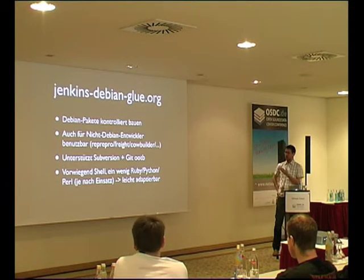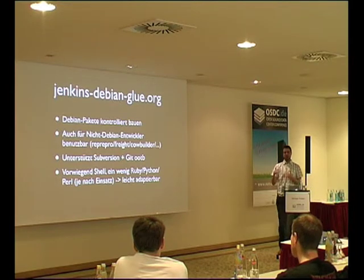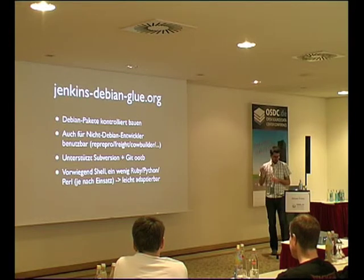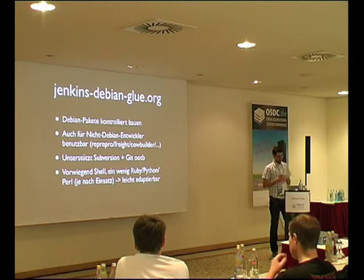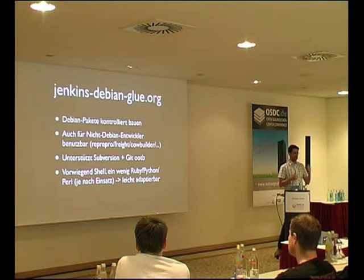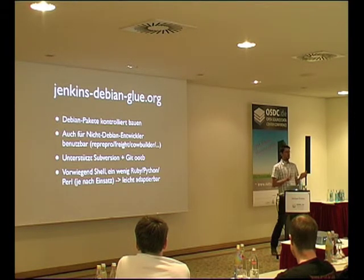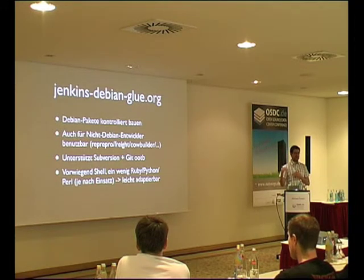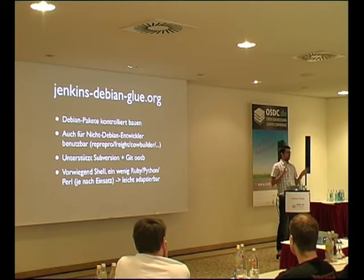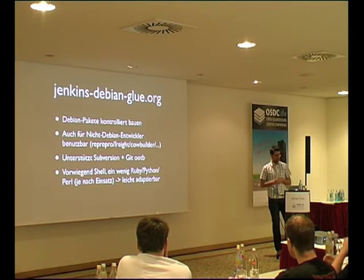Jenkins Debian Glue hat sich zum Ziel gesetzt, das auch für Nicht-Debian-Entwickler betreibbar zu machen. Die Einstiegshürde – wie kriege ich ein Debian-Paket kontrolliert gebaut, ohne all dieses Spezialwissen – wird abstrahiert. Es abstrahiert Reprepro oder Freight und cowbuilder, das alles wird automatisch ausgerollt. Out-of-the-Box wird Subversion und Git unterstützt, mit sehr geringem Aufwand. Es ist vorwiegend Shell – einige Projekte haben es leicht customized. Der Aufwand, das zu adaptieren, ist sehr gering. Es gibt ein paar Perl-, Ruby- und Python-Skripte für spezielle Sachen.